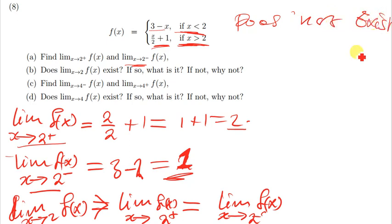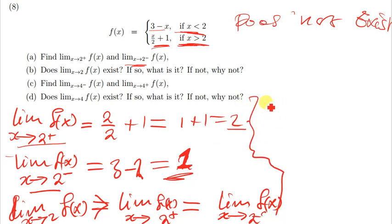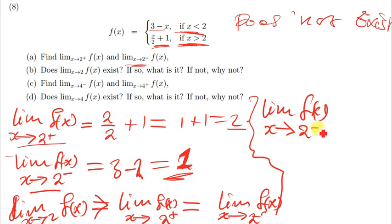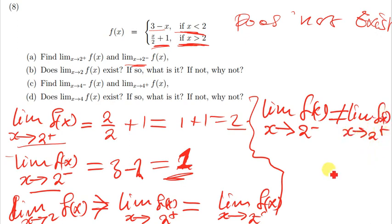If it doesn't exist, the question continues to ask: if not, why not? We can say it doesn't exist because the limit of f of x when x is approaching the negative side of 2 is not equal to the limit of f of x when x is approaching the positive side of 2. Alright, let's move on to the next question.